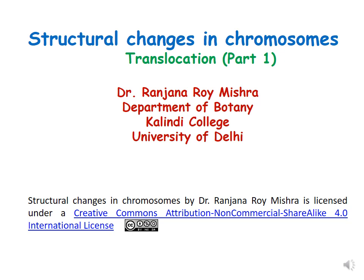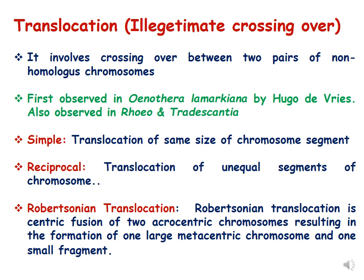Hello dear students. In this lecture we will be discussing the last part of structural changes in chromosomes, which is translocation. Translocation is also called illegitimate crossing over and it involves crossing over between two pairs of non-homologous chromosomes. Crossing over should take place only between homologous pairs of chromosomes, and when it takes place between non-homologous chromosomes, it is called illegitimate crossing over — this process is called translocation.